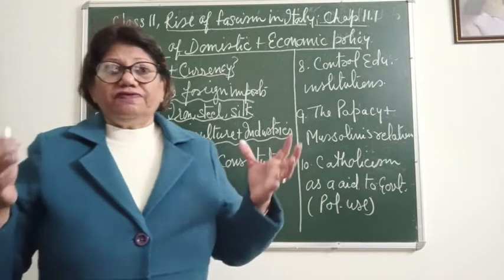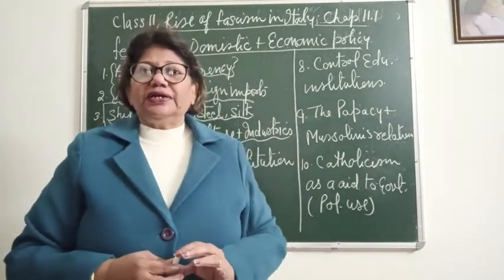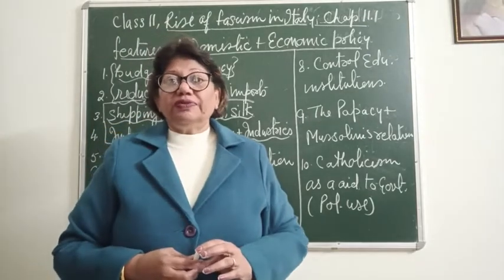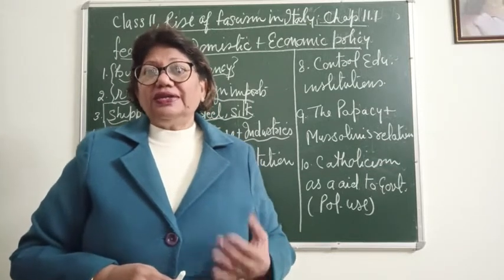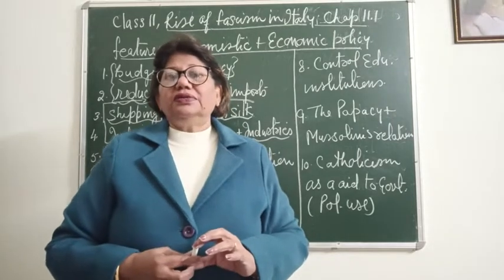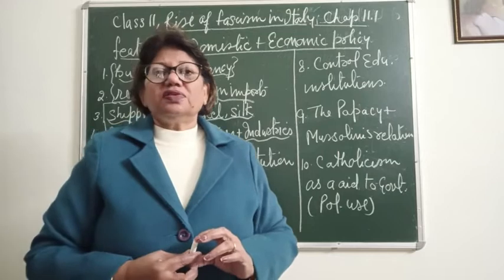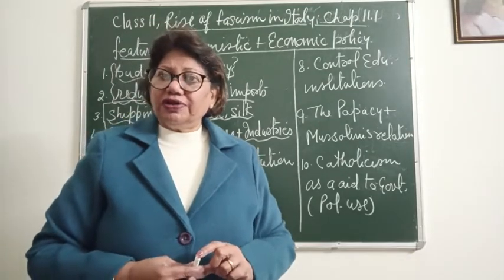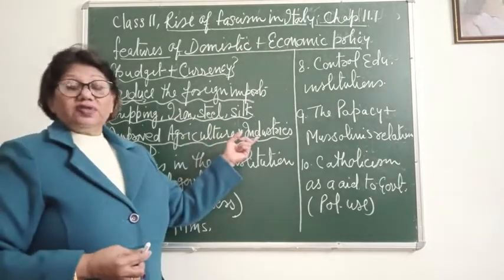Agricultural facilities were provided to Italians. For example, agricultural credit banks were opened from where they could easily get loans. Moreover, the irrigation department was improved. New agricultural techniques were introduced and people were made aware of them. Fertilizers and seeds were provided to farmers so they could grow their own wheat, crops, and other things rather than being dependent on foreign products.